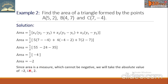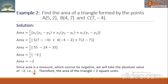Since area is a measure which cannot be negative, we will take the absolute value of negative 2, that is positive 2. Therefore, the area of the triangle equals 2 square units.